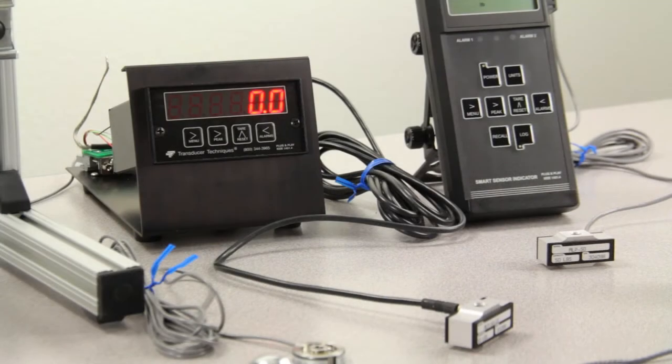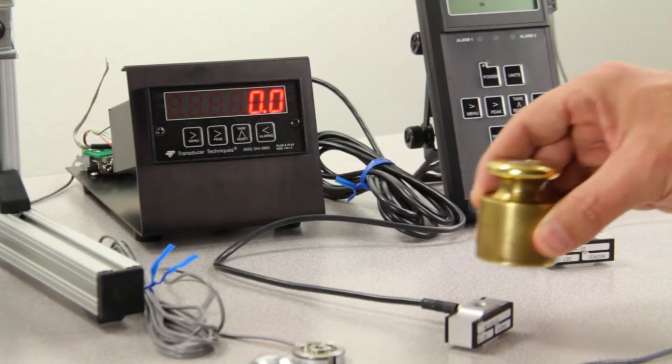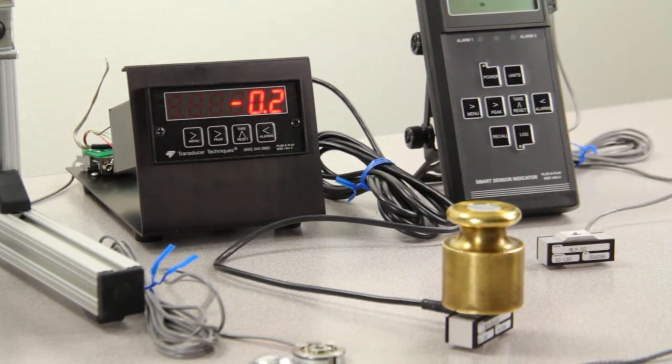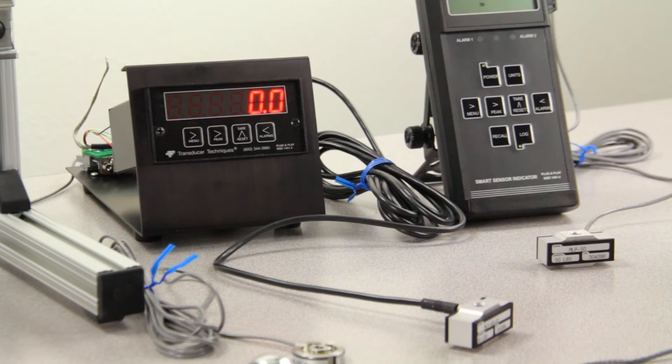Here I have a load cell connected without the smart plug-and-play option. I'll set a 1 pound weight on the load cell. Notice the meter is reading 0.2 pounds. This means the system is not calibrated.